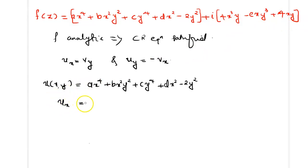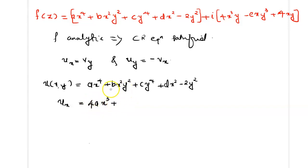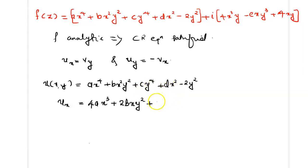ux is equal to u differentiated with respect to x, treating y as constant. So: ax raised to 4 differentiates to 4ax cubed; bx squared y squared gives 2bxy squared; cy raised to 4 gives 0 since y is constant; dx squared gives 2dx; and the minus 2y squared term is 0. So ux equals 4ax cubed plus 2bxy squared plus 2dx.